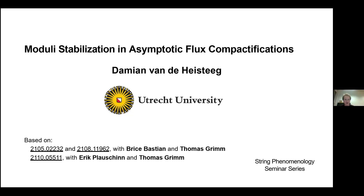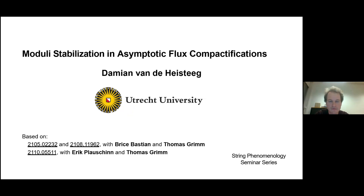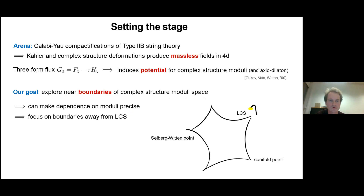What I want to convince you of today is that asymptotic Hodge theory can give you a very good perspective and can be a very good tool in studying moduli stabilization in string compactifications. We're thinking of Calabi-Yau compactifications of Type IIB string theory, and in the four-dimensional effective theory you get a lot of free massless scalar fields corresponding to the Kähler deformations and the complex structure deformations of these compactification manifolds.